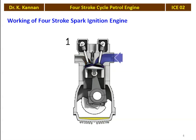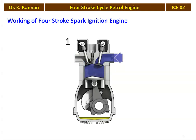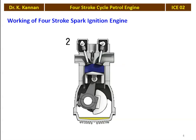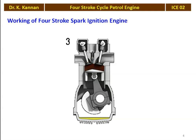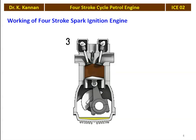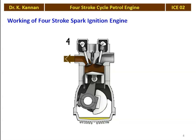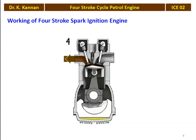Look at here. First, the intake valve opens and the fresh air-fuel mixture shown in blue color is entering. Both valves are closed and it is getting compressed. A spark is produced, combustion is taking place and the piston goes downward, power is produced, and the exhaust valve opens and the burnt gases are led to the atmosphere.